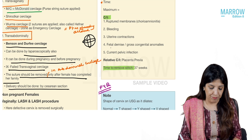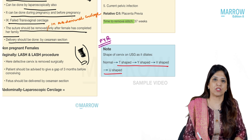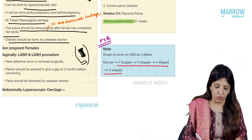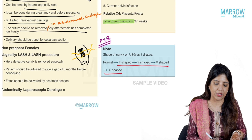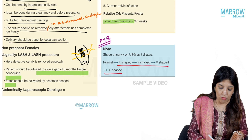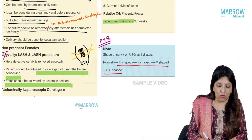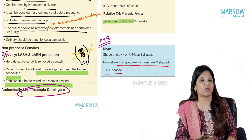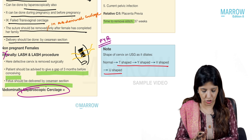In non-pregnant females, vaginally, the Lash procedure can be done — a part of the defective cervix is removed and the cervix is sutured. However, this makes the cervix very fragile, so patients must wait three months before conceiving and must deliver by cesarean section. The Lash procedure has many complications and is not done these days; currently, laparoscopic cerclage is preferred for non-pregnant females.